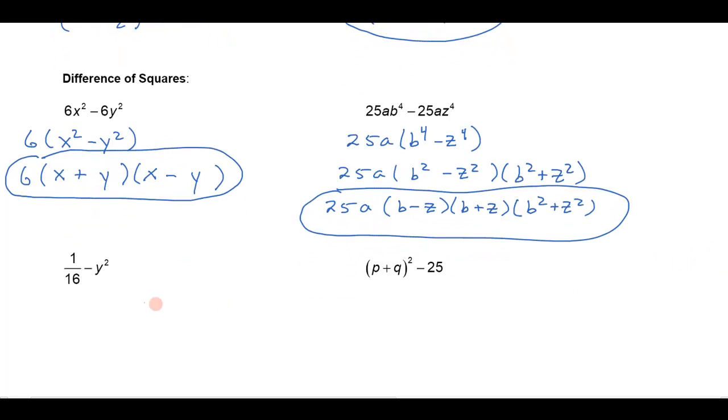Here's another example. If I have 1 16th minus y squared I have something squared here minus something squared here. So I can factor that as the square root of 1 16th. Well that's just 1 4th minus y and then the same thing 1 4th plus y. And you do this so often. This occurs so frequently in algebra you want to get very good at factoring these differences of squares as the sum and the difference of the terms. And those terms end up being the square roots of those numbers there.